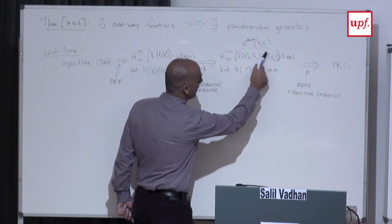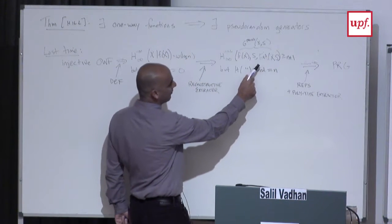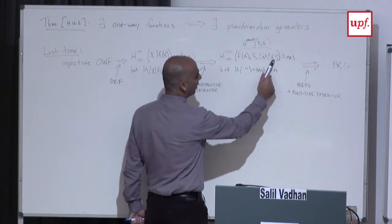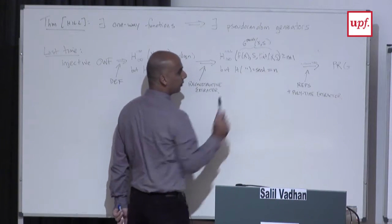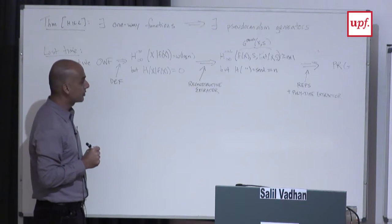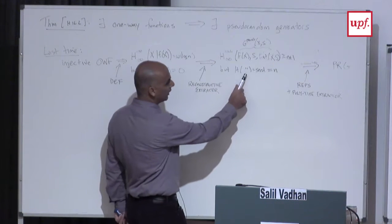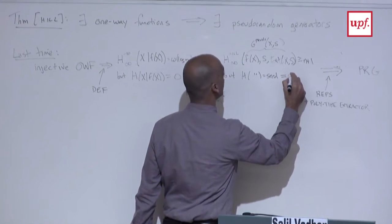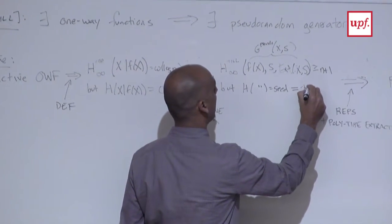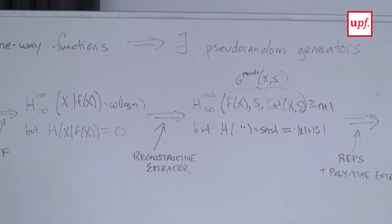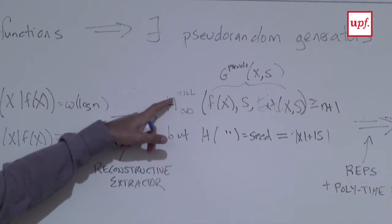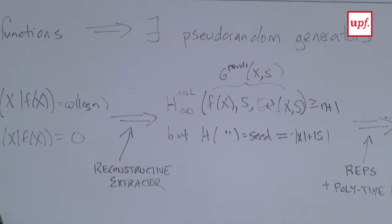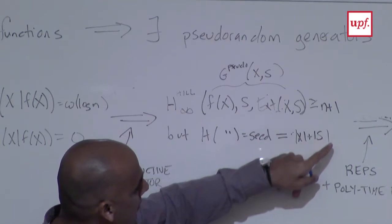The output of a reconstructive extractor on something that's unpredictable will be indistinguishable from a uniformly random bit. So this triple is computationally indistinguishable from having n+1 bits of entropy, but its actual entropy is the seed length — the length of x plus the length of s. We have a gap of 1 bit between Hill pseudo-entropy and actual entropy.